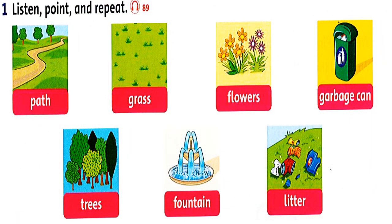Listening, exercise 89 - listen and point. Path, grass, flowers, garbage can, trees, fountain, litter. Flowers, garbage can.